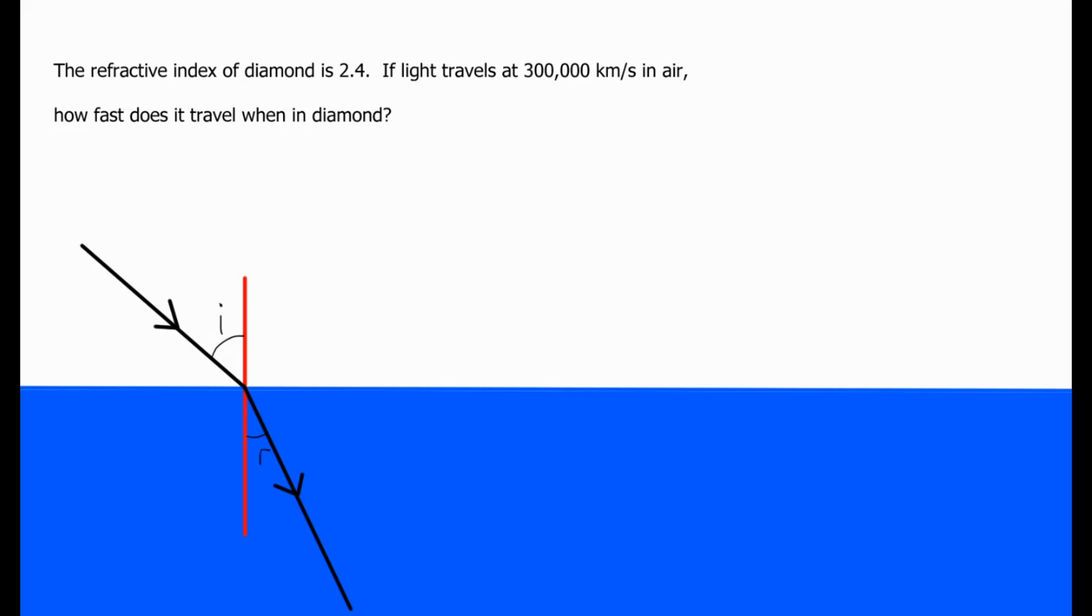Here's our first question. It says the refractive index of diamond is 2.4. If light travels at 300,000 km per second in air, how fast does it travel when in diamond?